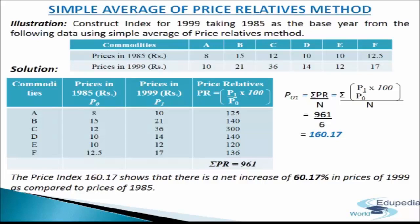Applying the formula P01 = Sigma PR / N, we get 961 / 6 = 160.17. This means the price index of 160.17 shows a net increase of 60.17% in prices in 1999 compared to 1985. Note that the answers from the simple aggregative method and the simple average of price relative method may not be the same — there may be variation depending on the method used.